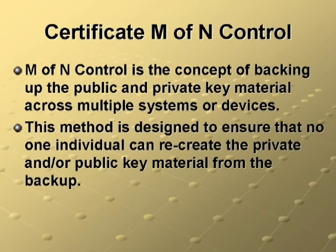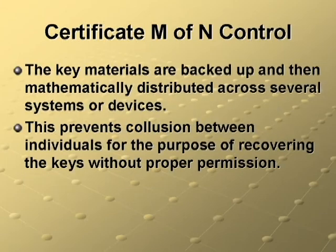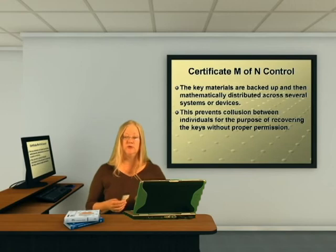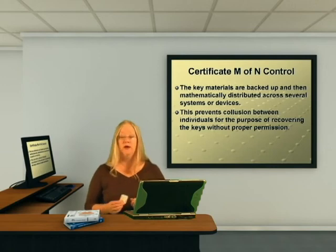There's also something called M of N control, used to securely store important keys such as from the root CA itself. Essentially, this is the concept of backing up the public and private keys across multiple systems or devices. This method ensures that no one individual can recreate public or private key material from a single backup — the key materials are mathematically distributed across some number of systems, hence M of N. This prevents collusion between individuals for the purposes of recovering keys without proper permission, helping minimize an organization's exposure to the risk of one person misusing a privilege and performing a sensitive action like key recovery without authorization.